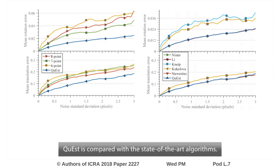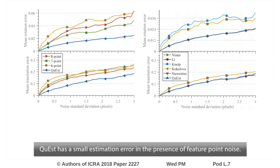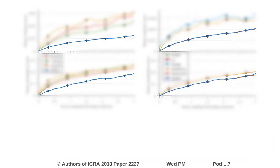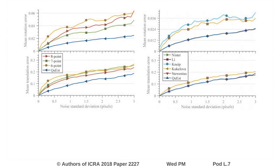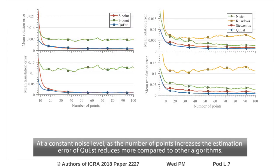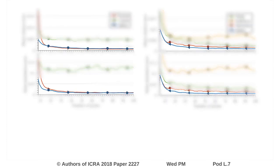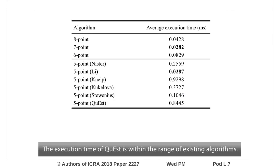Quest is compared with the state-of-the-art algorithm. Quest has a small estimation error in the presence of feature point noise. At a constant noise level, as the number of points increases, the estimation error of Quest reduces more compared to other algorithms. The execution time of Quest is within the range of existing algorithms.